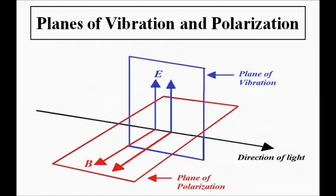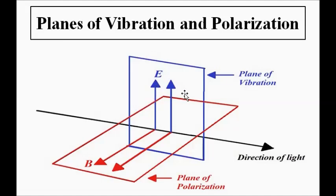Polarization brings all the electric vectors — shown here as blue vectors — into one plane, pointing in one direction. Here they point towards the top, but it can be any direction as long as they are confined to one plane of vibration. The plane in which the electric vectors are confined — this imaginary blue plane which passes through the direction of propagation of light — is called the plane of vibration.